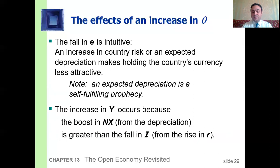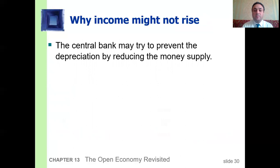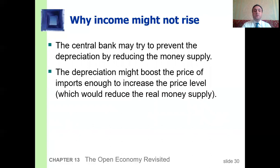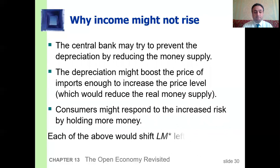Why income might not rise: the central bank may try to prevent depreciation by reducing the money supply. The depreciation might boost the price of imports enough to increase the price level, which would reduce the real money supply. Consumers might also respond to the increased risk by holding more money. Each of these effects would shift the LM curve to the left.